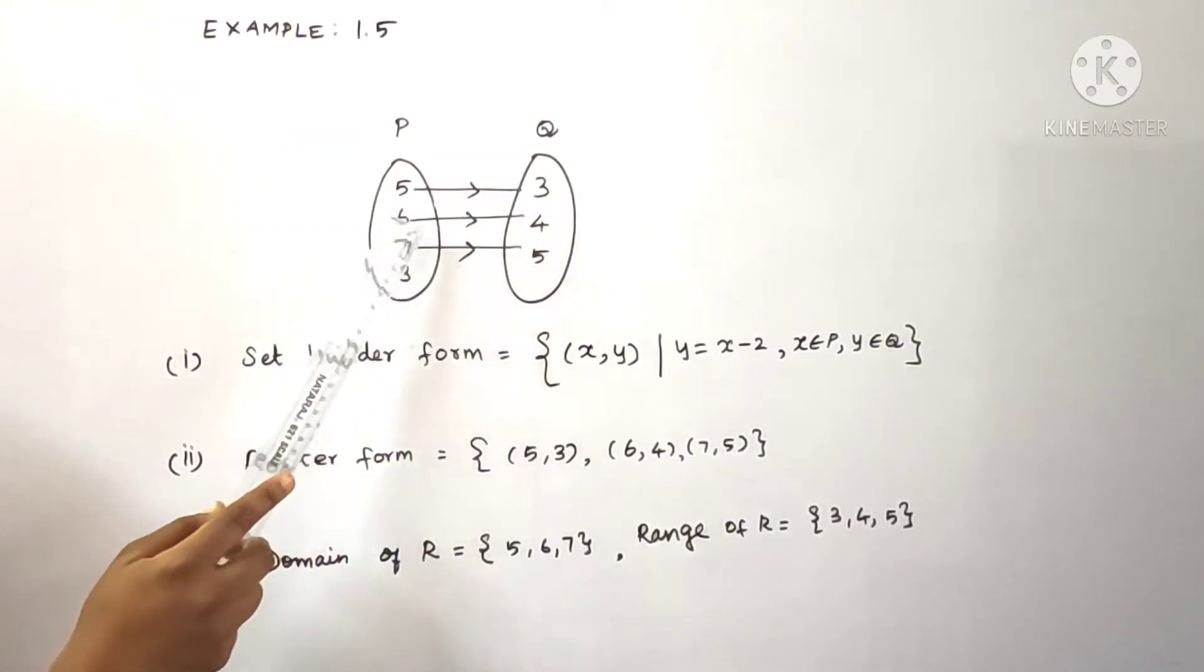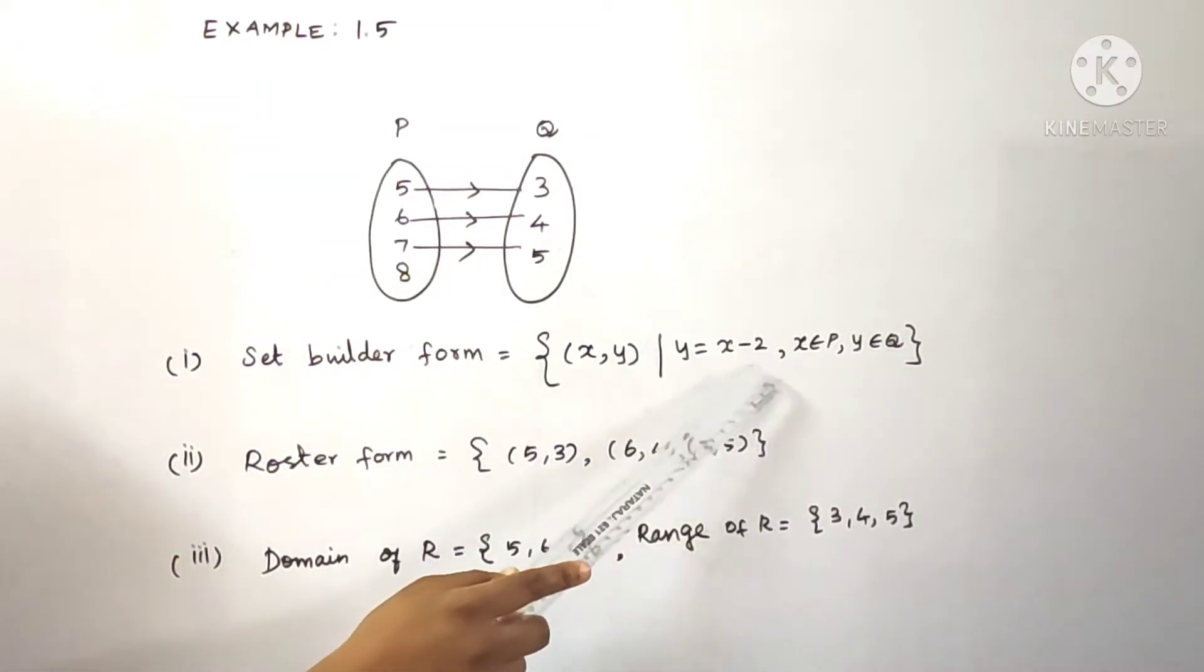So 5-2 is 3. 6-2 is 4. 7-2 is 5. So y is equal to x-2.